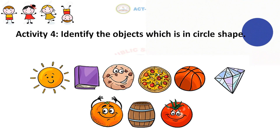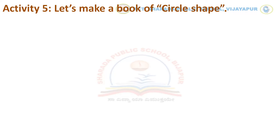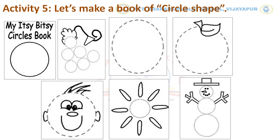Now, let's move to the fifth activity. That is, make a book of circle shape. Dear parent, please guide your child to do this activity. Before preparing this book, let's complete the coloring and tracing work.